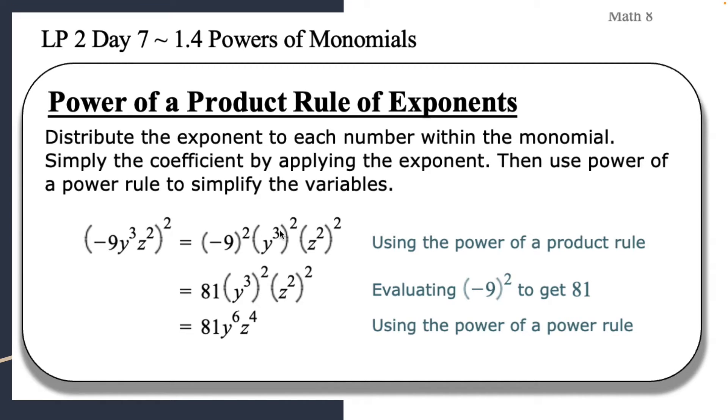So what that means is when I have a power on a power, I can multiply the two powers together. So we can see that happening. So this one, all they did was evaluate the negative 9, so they're showing you that over here. They're giving you little notes.